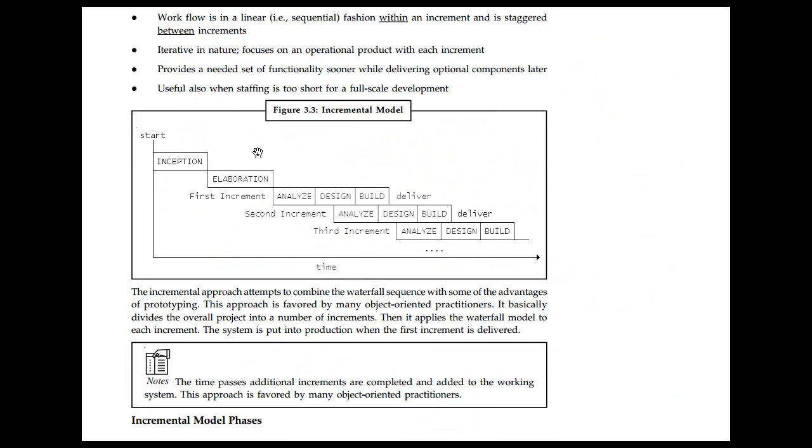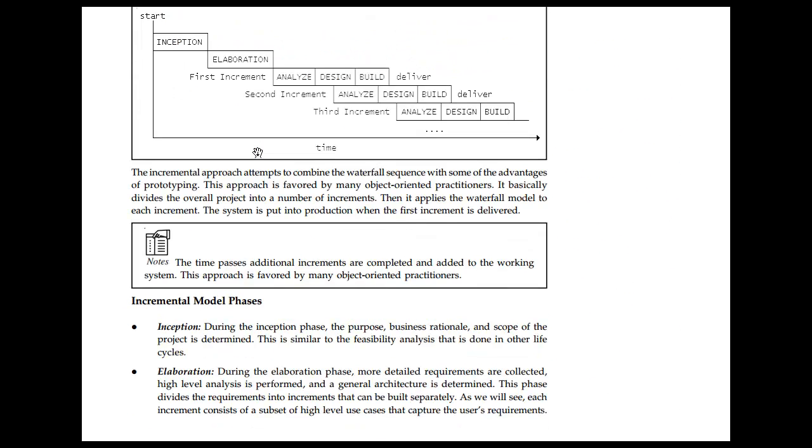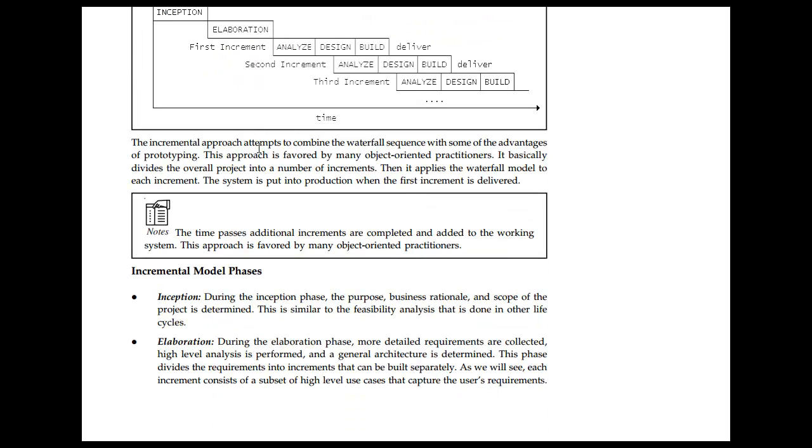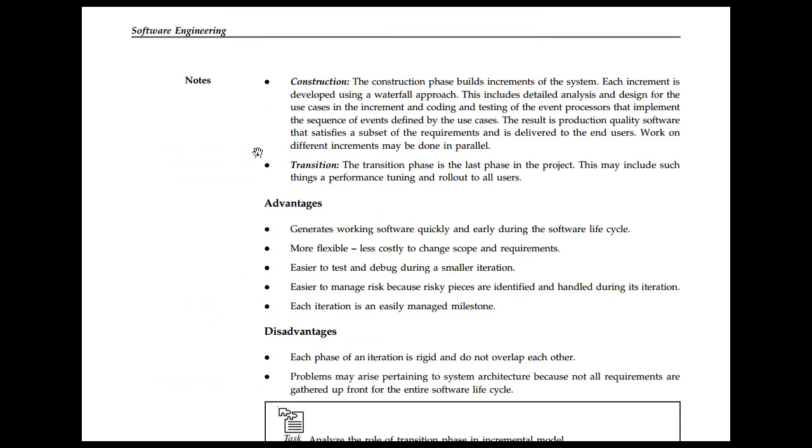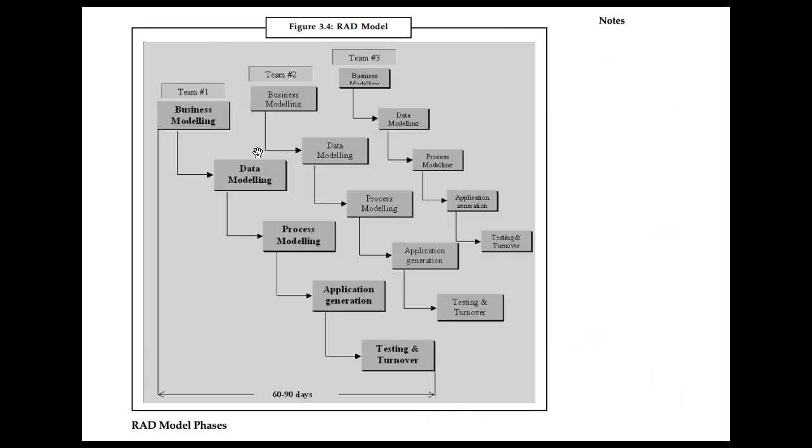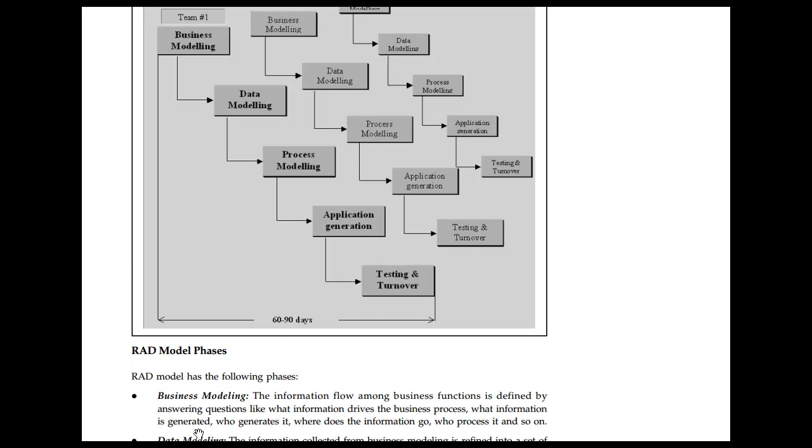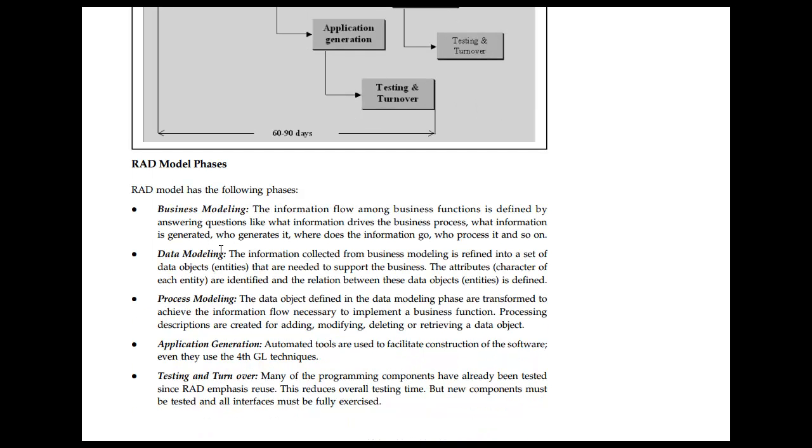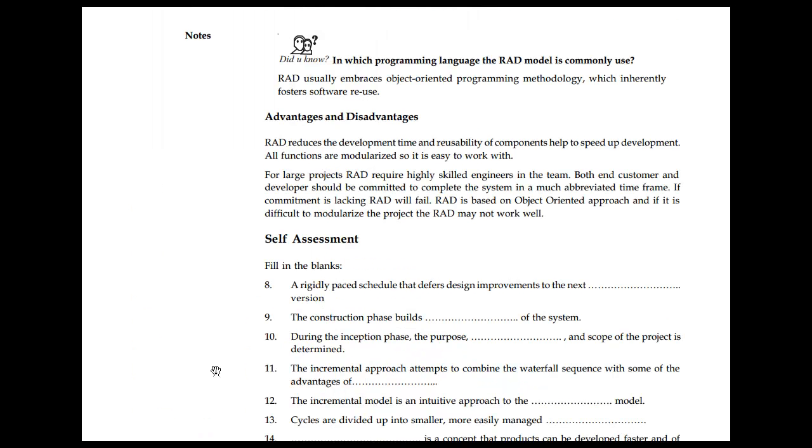Then you have the incremental model. Incremental model: inception, during the inception phase the scope is defined. Elaboration, the first increment, second increment and third increment, and rapid application development. So business modeling, data modeling, process modeling, application generation, turnover. Team 1, Team 2 both working on business modeling. The following phases: business modeling, data modeling, process modeling, application generation and testing.